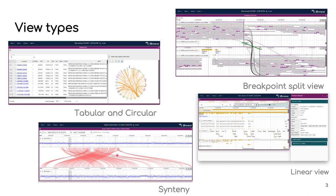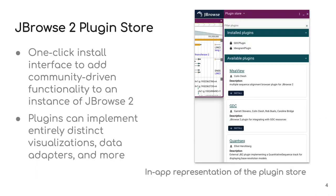What's exciting about JBrowse and its support for plugins is not only does it have all of these views but it easily supports third party developers designing and installing their own plugins. If you're a developer you can make your own custom view type. To facilitate community contributions to JBrowse2 through plugins, we developed the plugin store.